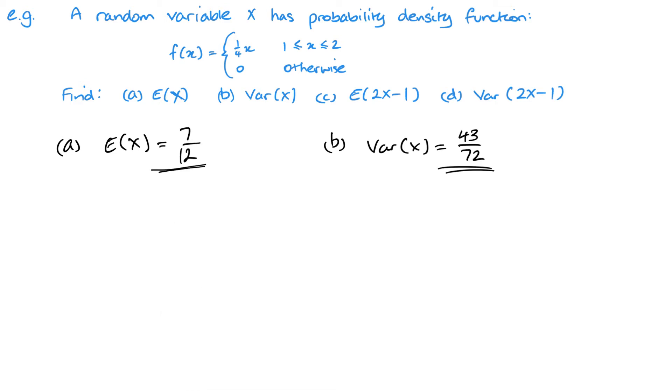Moving on to part c, we have E of 2x minus 1, so that means 2 times E of x minus 1. It's 2 times 7 over 12 take away 1, or we've got 14 over 12 minus 1, which is going to be 2 over 12 or 1 sixth. Part d, we've got the same thing for variance, so it's going to be 2 squared times the variance of x, but we don't take away the 1, so we've got 4 times 43 over 72.